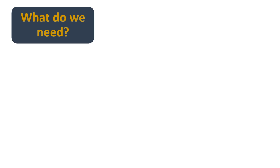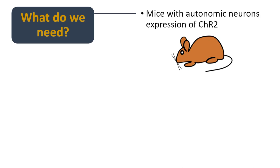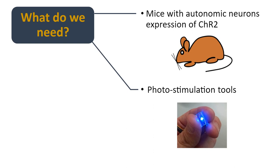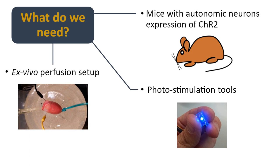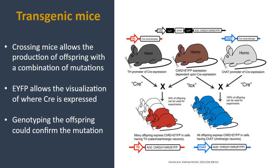Now that we know what optogenetics is and why we need different ways to activate the autonomic system, let's discuss what we need to put things into place. You need a model — in this case, we use mice with autonomic neuron expression of channelrhodopsin. You need something to stimulate that channelrhodopsin, and I'll tell you which tools we use. And since we're dealing with ex vivo experiments, you need something to keep your heart alive — providing enough nutrients and oxygen to keep it pumping.